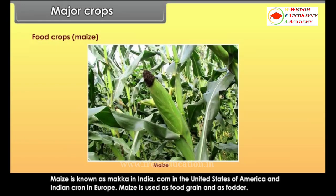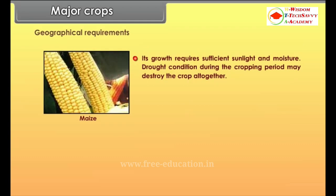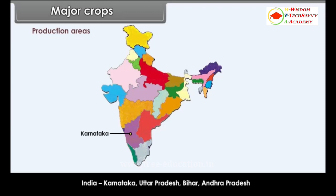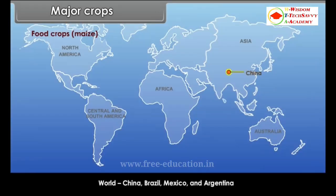Maize is known as makka in India, corn in the USA, and Indian corn in Europe. It is used as food grain and as fodder. Its growth requires sufficient sunlight and moisture; drought conditions during the cropping period may destroy the crop altogether, and stagnant water in the maize fields is also harmful to plants. Major producing states in India include Karnataka, Uttar Pradesh, Bihar and Andhra Pradesh. World producers include China, Brazil, Mexico and Argentina.